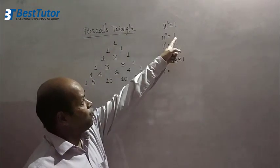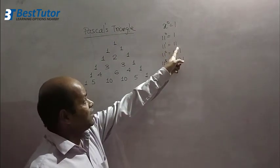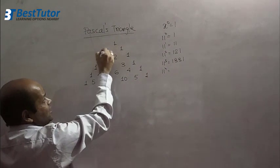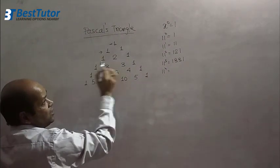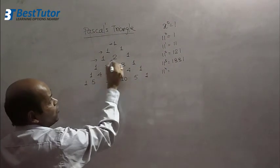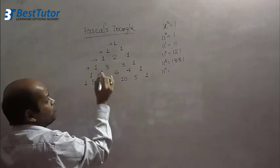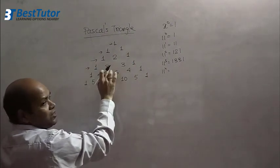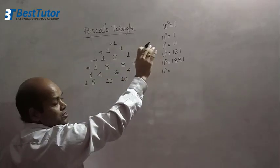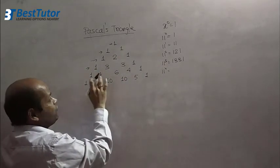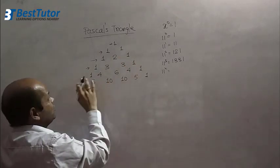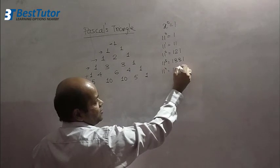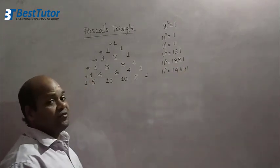See here. What is 11 raised to 0? 1. 11 raised to 1? 11. Here it is 1, 1 equals 11. 11 square is 121. 11 cube, I have to remember this 1, 3, 3, 1. It is 11 cube, so it is 1331. Now it is 1, 4, 6, 4, 1. It is 11 raised to 4. That is 14641.